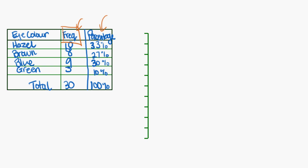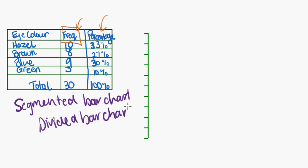Another way that you might see categorical data represented would be in a segmented bar chart, which is sometimes called a divided bar chart, segmented bar chart, divided bar chart, and perhaps a stacked bar chart as well.